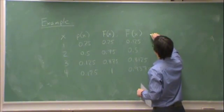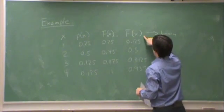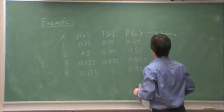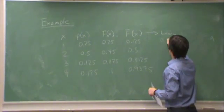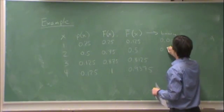Okay, in binary, f bar of x - I need the binary representations of these guys. What's 0.125 in binary? 0.001. 0.5 in binary, 0.1.